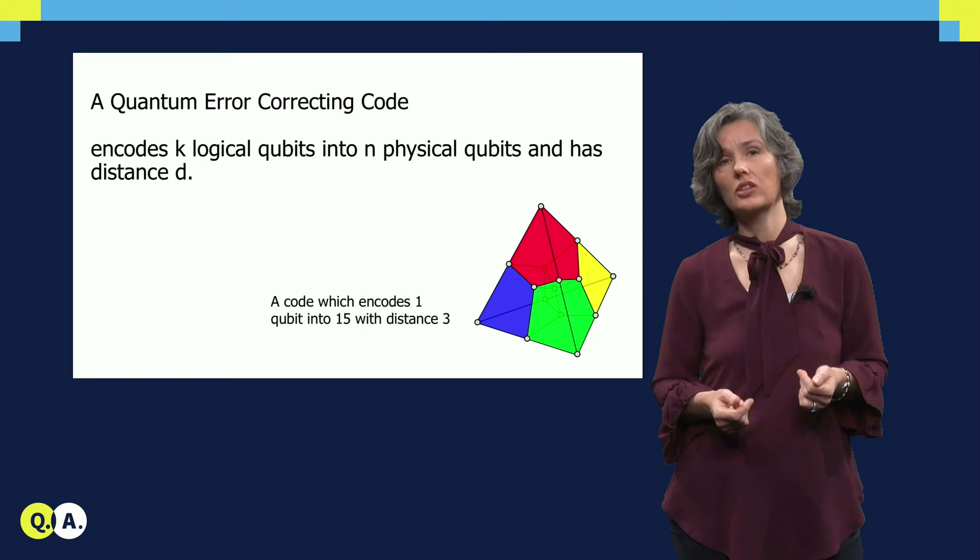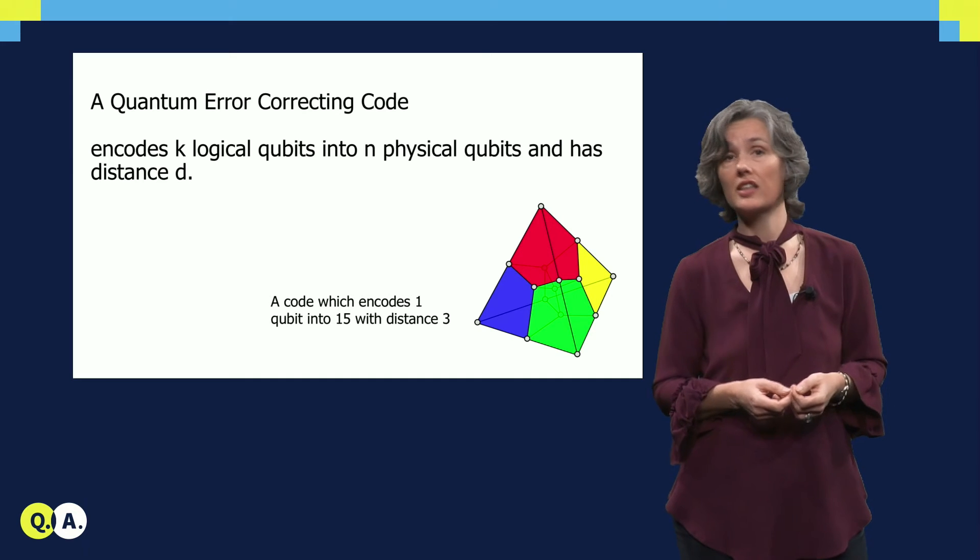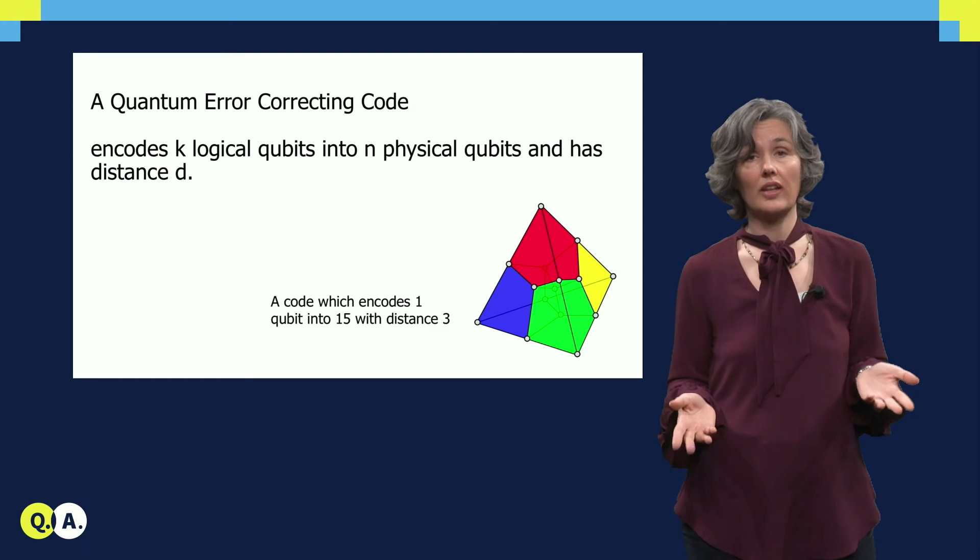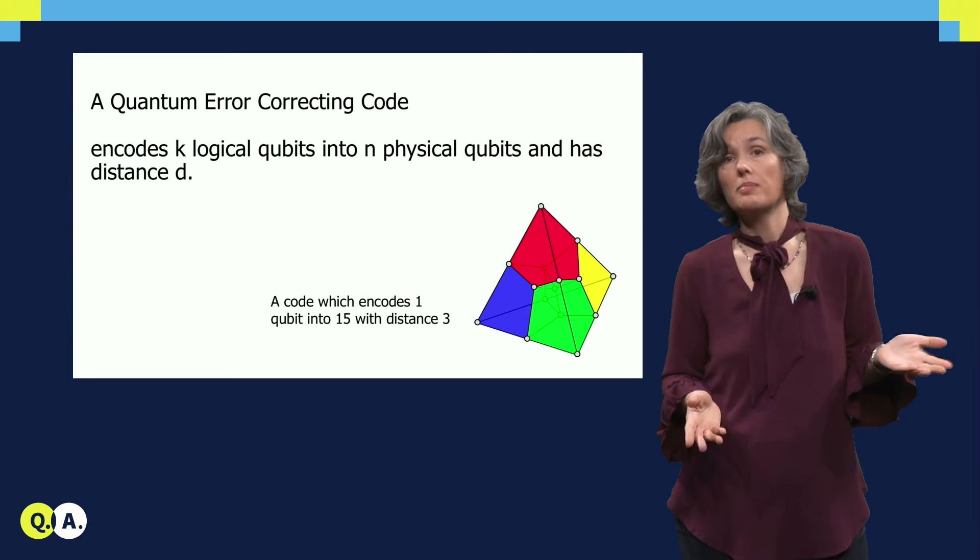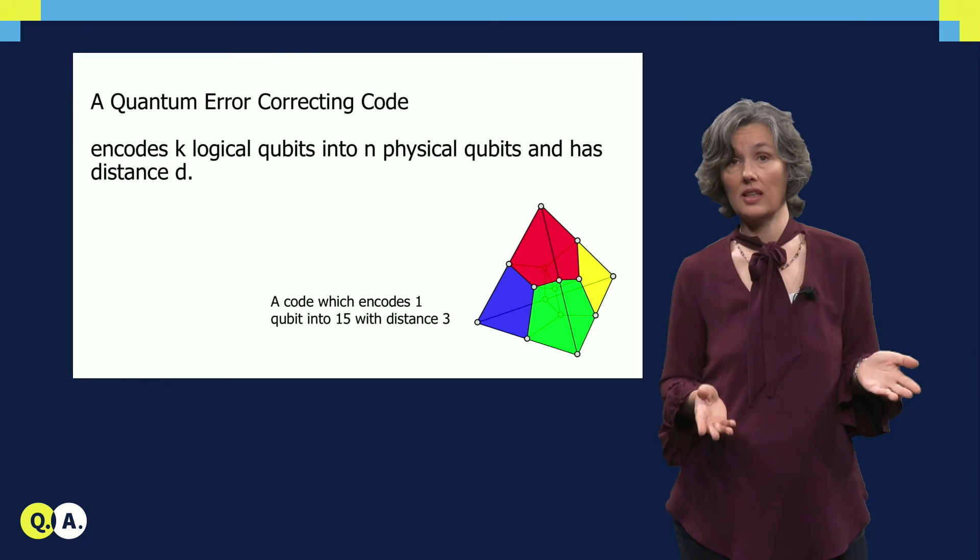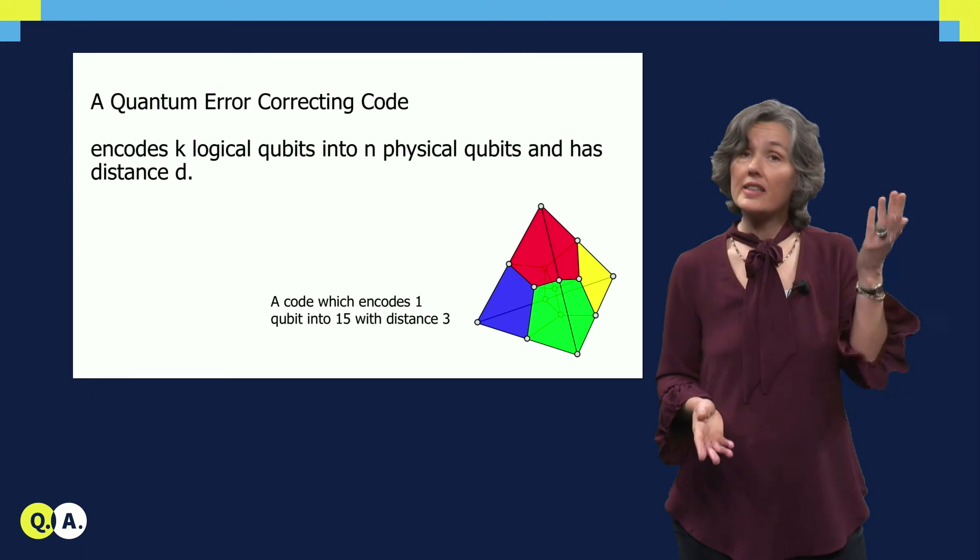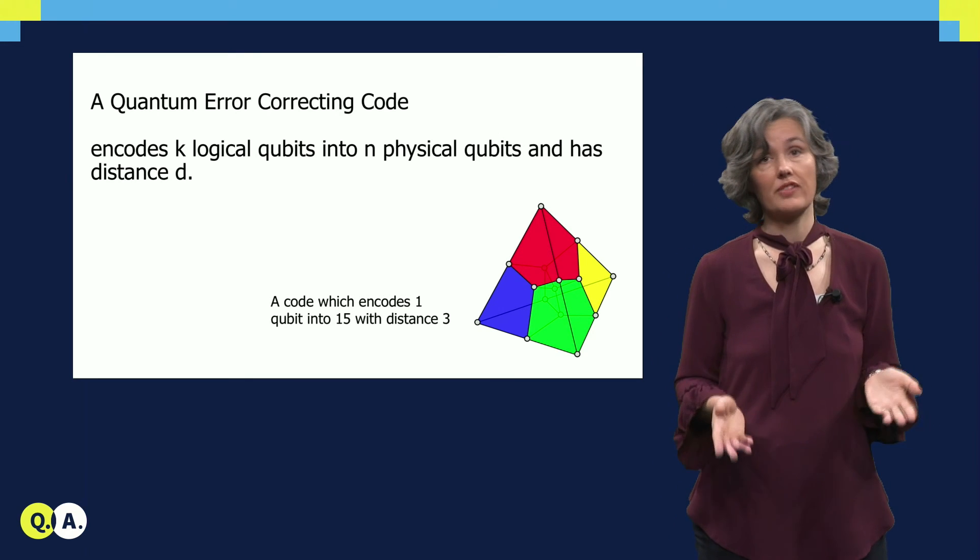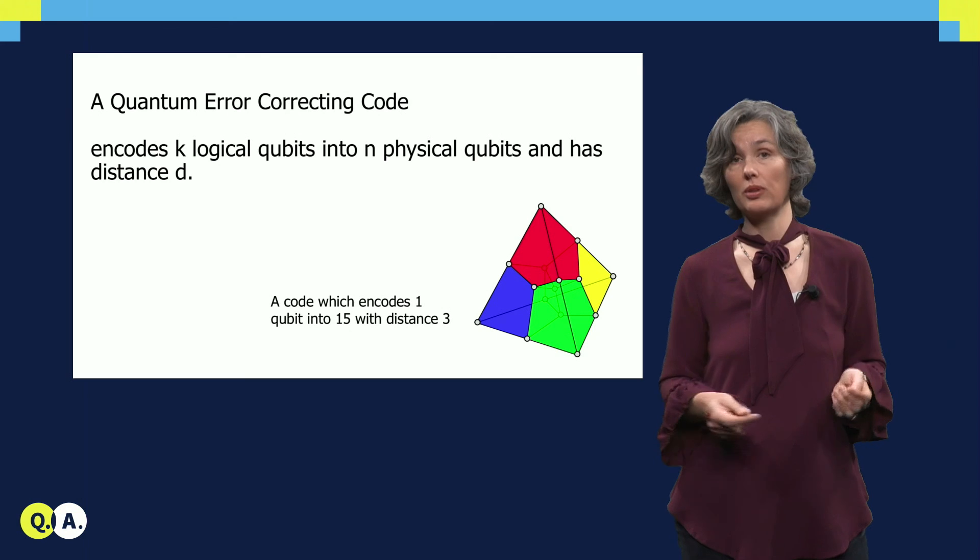But what quantum error correction codes are there and which one is in fact the best? Well, there are many classes of codes and there is no single answer to which one is best. A code can in general encode k into n qubits. Furthermore, the code has some distance d, which means that it can correct almost up to d over 2 errors. The STEAM code that we've seen has distance 3 and it can correct a single error. So typically one would like to have a high distance and high k versus n. But more important in practice is in fact how one gathers error information and how one does that fault tolerantly. And this is what we'll discuss in the next video.